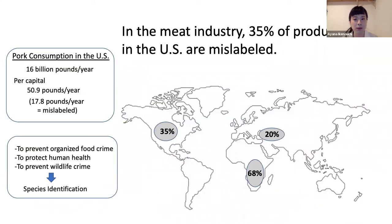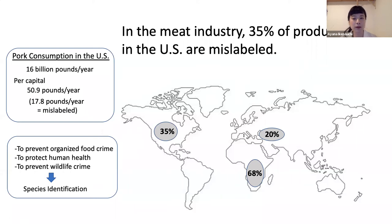Pigs are important animals as a source of protein for most of us. Every year, a large amount of pork is consumed in the U.S. However, scientists found that 35% of meat products in the U.S. are mislabeled. This happens in the world too. Food adulteration is a big problem for human health, causing allergic reactions. In order to prevent organized food crime and protect human health, species identification has an important role.